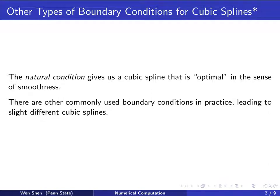For Natural Cubic Spline, the additional two conditions we apply, we call them the natural condition. They give us a cubic spline that is optimal in the sense of smoothness.